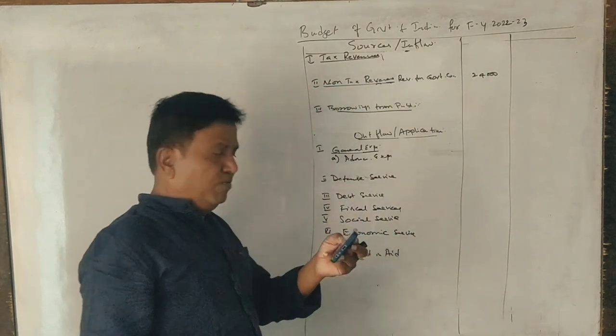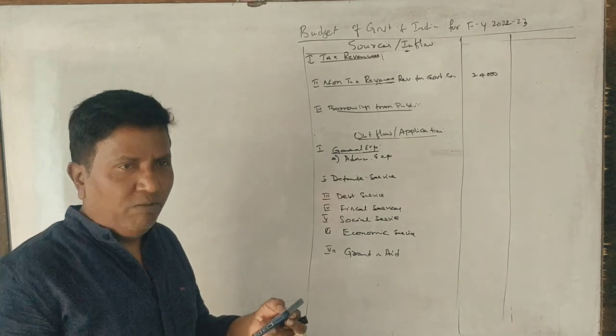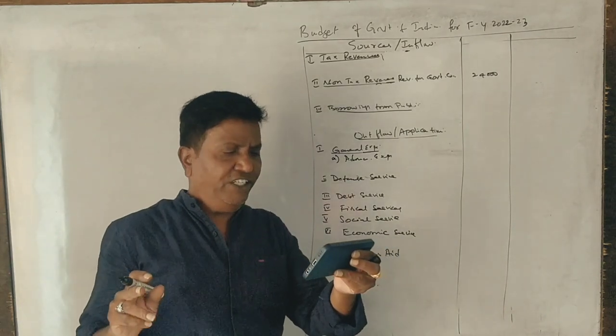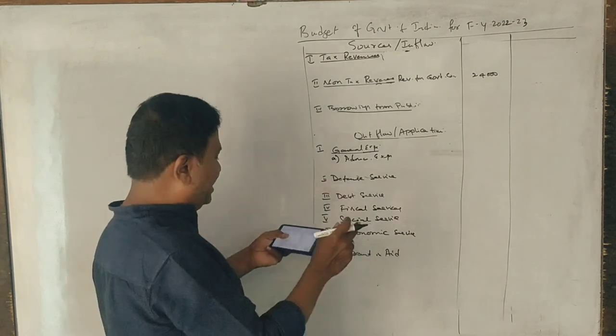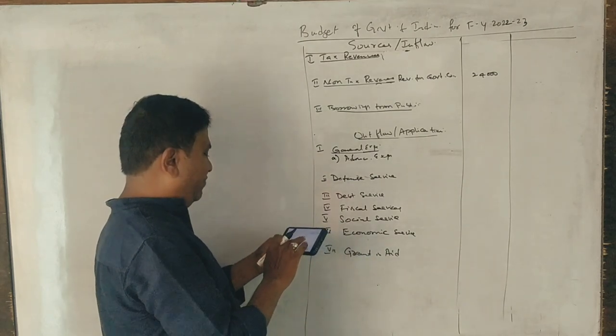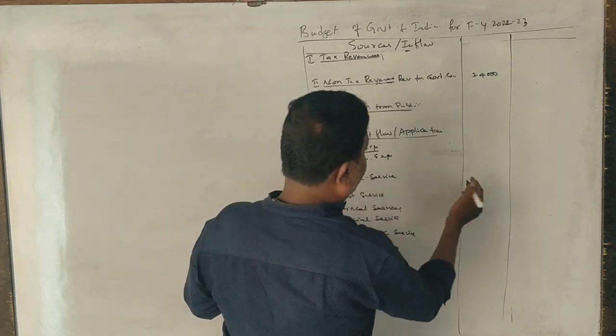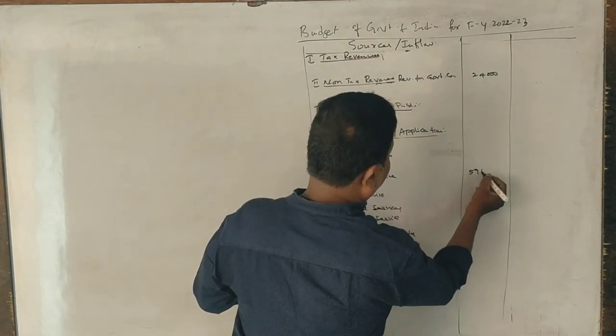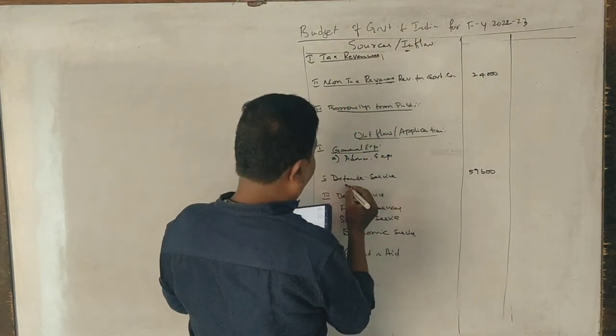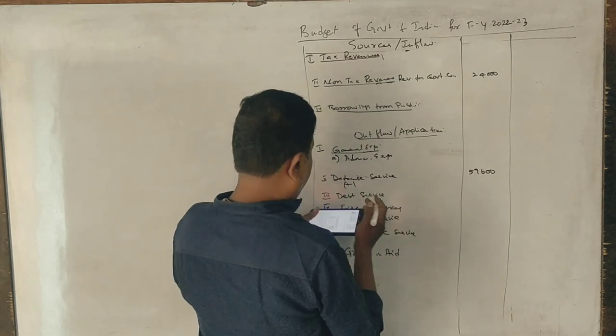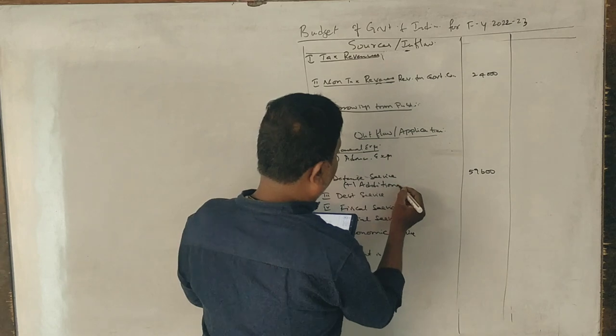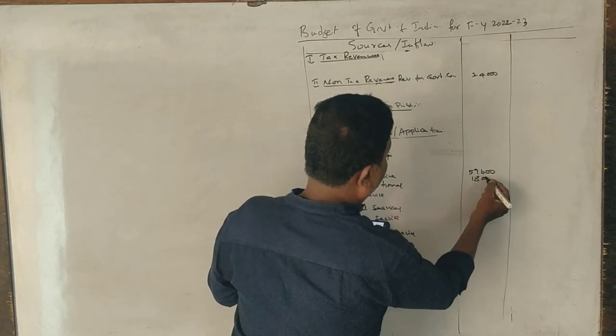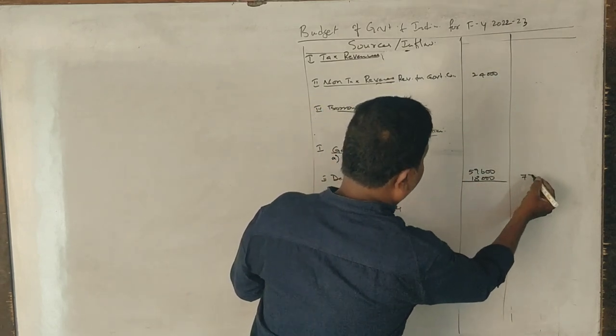Next, there is a fresh demand of 18,000 towards defense. Defense amount is 59,600. How much additional? 18,000. So total becomes 77,600.